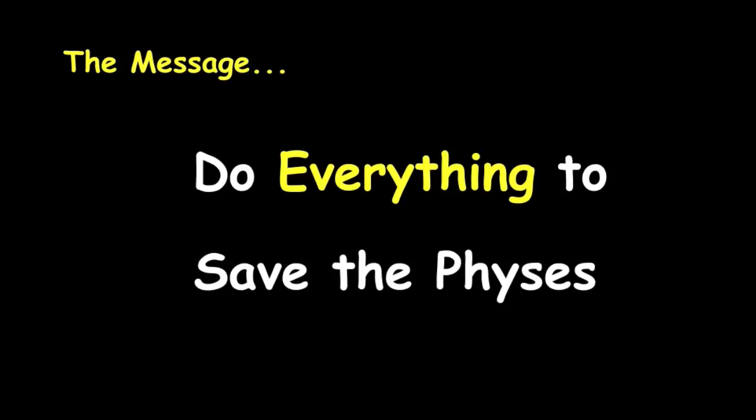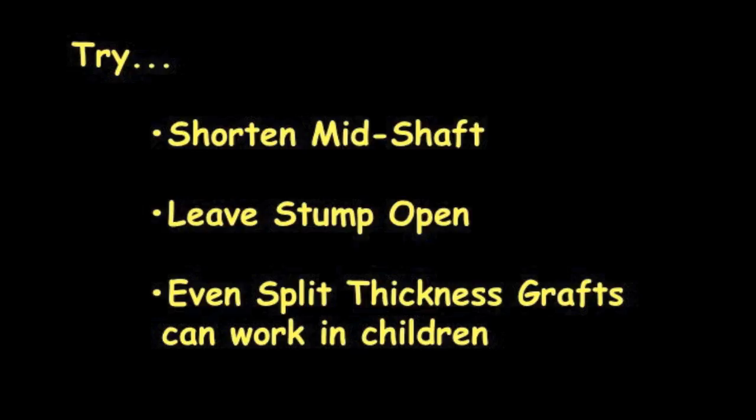The key principle is to do everything possible to save the physis. If skin coverage is needed, consider taking a section out of the mid-shaft and shortening the bone sufficiently to get coverage, then gaining the residual growth over time. A mid-shortening of 5 cm will still save the 32 cm of distal growth that will occur. Another option is to leave the stump open — children fare better in that regard — and one can even use split thickness graft in children, which is not something that works in adults.